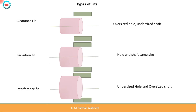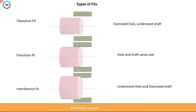Then there is the transition fit, which is the case in which the hole and shaft size are almost the same, and hence the assembly will not require that much force. A snug fit is an example of a transition fit.